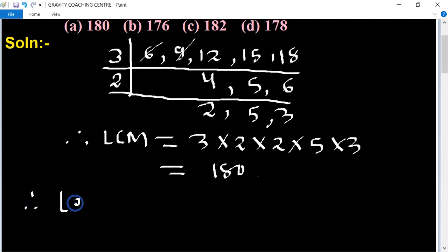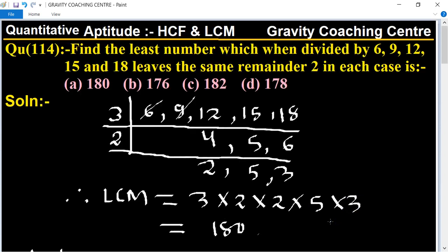Therefore the required least number equals 180 plus 2 equals 182, which is the required answer. So option C is the correct answer.